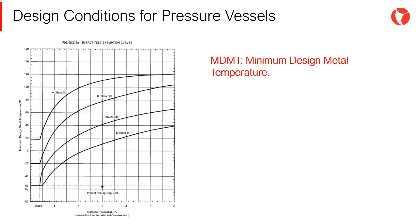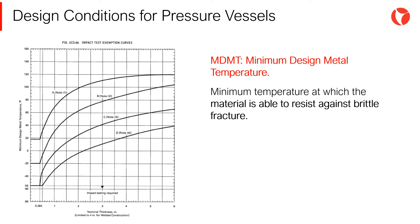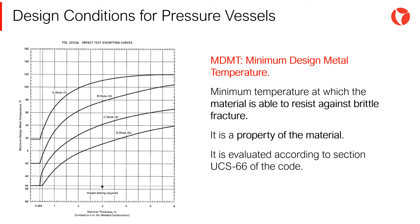Minimum design metal temperature, MDMT. It is the minimum temperature at which the material is able to resist brittle fracture. It is a property of the materials, and it is evaluated according to section UCS-66 of the code.